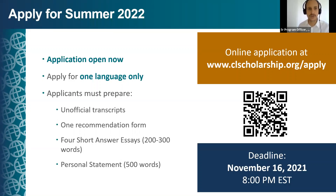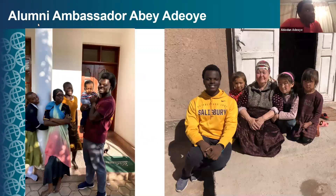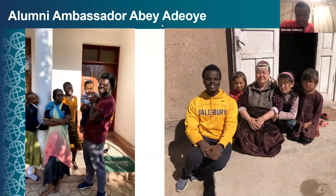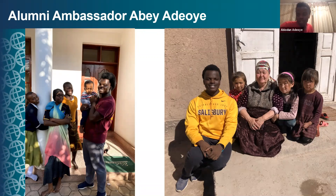Now we hear from Abe about his background and experiences. Abe first applied for CLS in 2017 as a first-year student at Salisbury University, applying for a different language — and didn't make the first cut. In 2019, he did the Boren Scholarship to Tanzania and studied Swahili there for six months. His advisor encouraged him to reapply for CLS. He applied again and advanced to the semifinalist round, then was selected as a finalist.